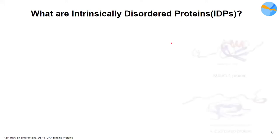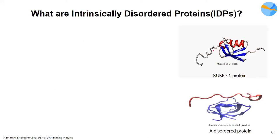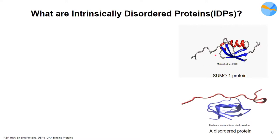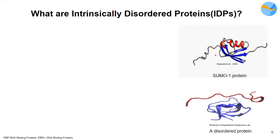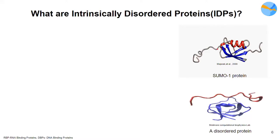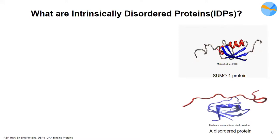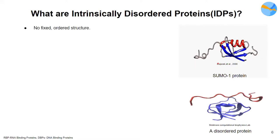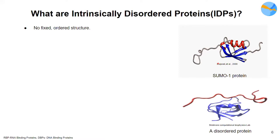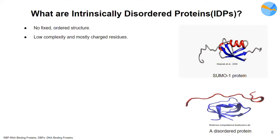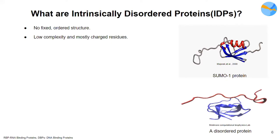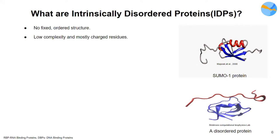Intrinsically disordered proteins are not our usual structured proteins. As you can see from these GIF images, these proteins are basically floppy — they are changing their conformation at regular time intervals, and that's why they do not have a fixed or ordered structure at a given time. Also, they are composed mostly of charged residues and are composed of a limited set of amino acids out of the 20 that we know.